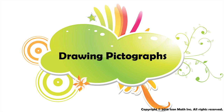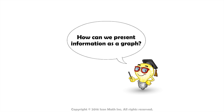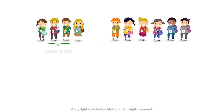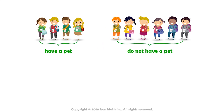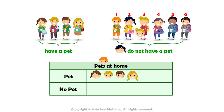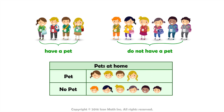Drawing Pictographs. In this lesson, we want to learn how to present some information as a graph. For example, we may want to know how many third grade students have a pet at home and how many do not. We can create two categories on a grid: one called pet and the other called no pet. Then for each category, we put as many pictures of stars or even faces as there are students in that category. Now we have a pictograph.